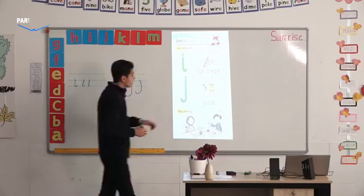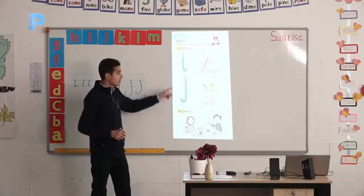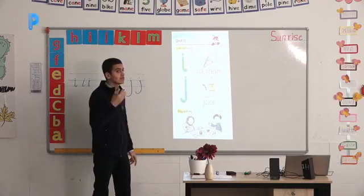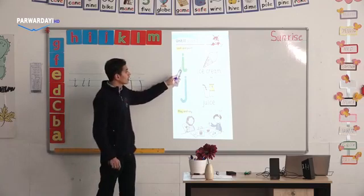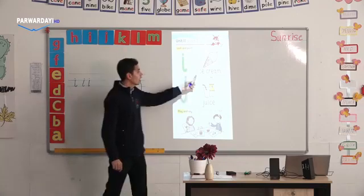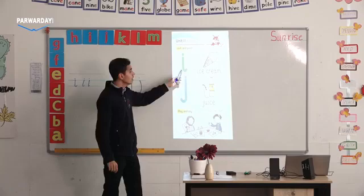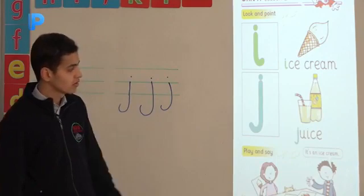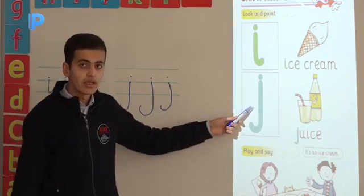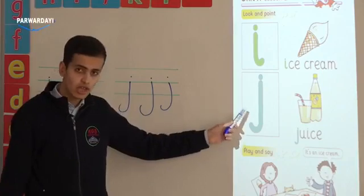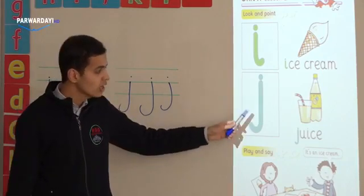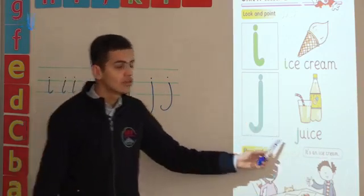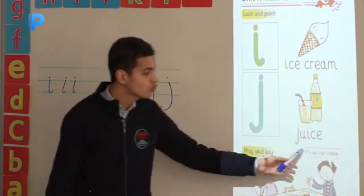Now, we're going to repeat these letters and these sounds one more time so that you can understand better. I, I, I, ice cream. I, ice cream. I, ice cream. Now, to the second letter. J. For the J letter, we say J as the sound. So, we say J, J, J, juice. J, juice. J, juice.